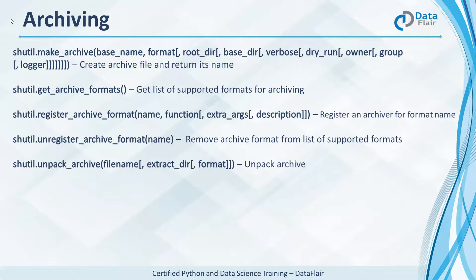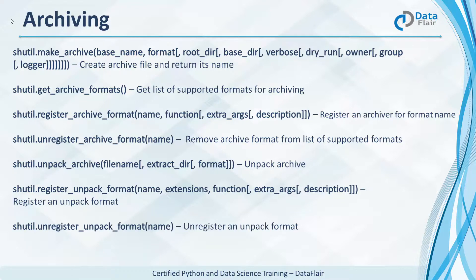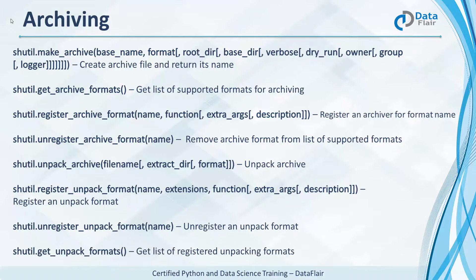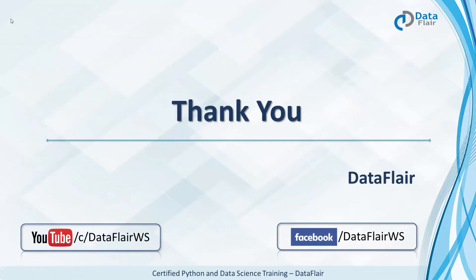unpack_archive unpacks an archive. get_unpack_formats gets us a list of all the registered unpacking formats, similar to get_archive_formats. And that's the shutil library in Python.